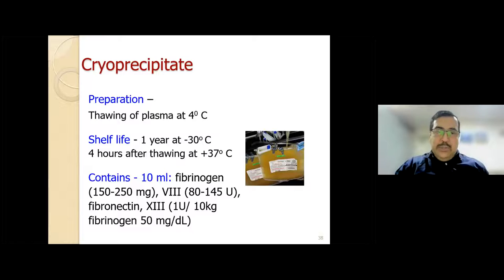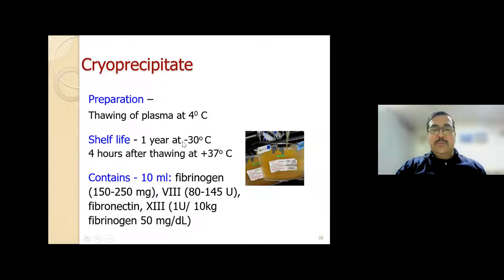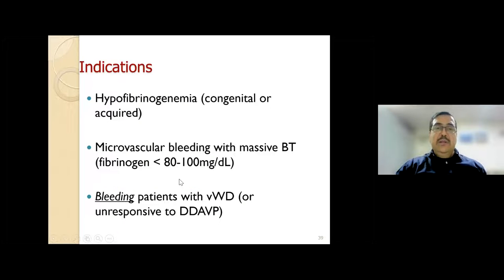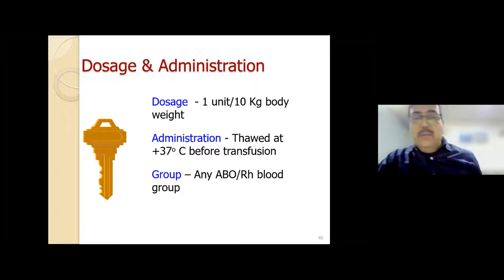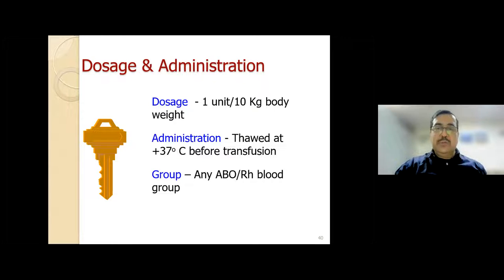The fourth component is cryoprecipitate. It is made by thawing FFP, stored at minus 30°C, and must be thawed and used within four hours. The indication is hypofibrinogenemia. The dose is generally 1 unit per 10 kg body weight for an adult—approximately 10 bags at a time—thawed at 37°C. Any ABO and RH group can be used for cryoprecipitate.